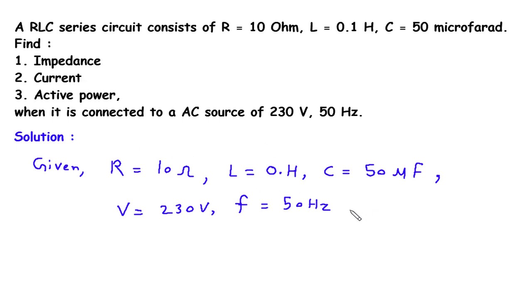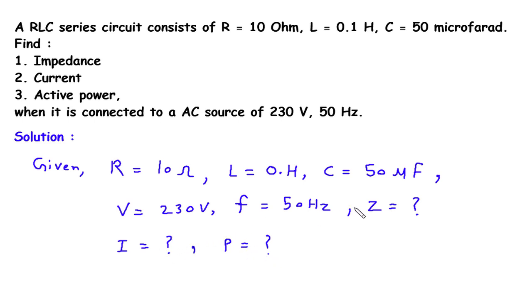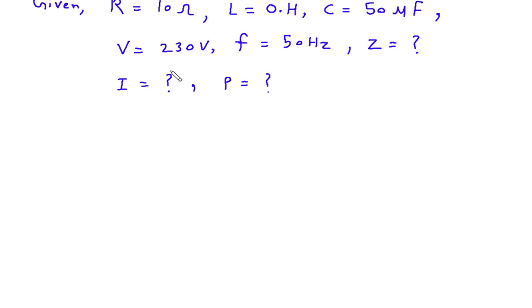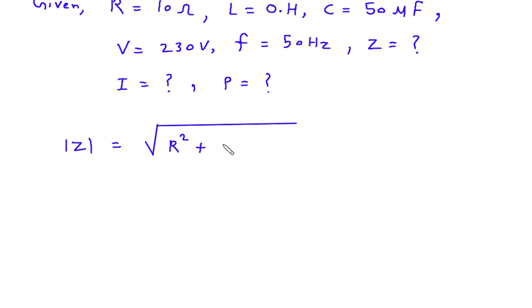We have to find: impedance Z, current I, and active power P. First of all we will find impedance Z. The formula for finding impedance Z is: magnitude of Z equals under root of R squared plus (XL minus XC) whole square.